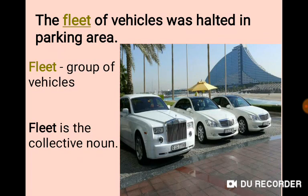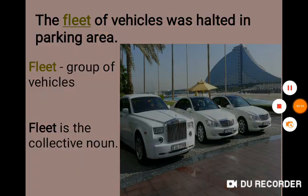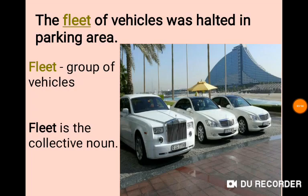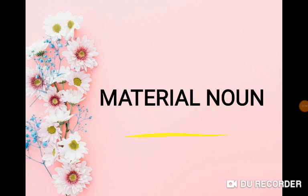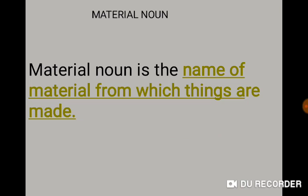So, collective noun means: it is a group of animals, persons, things, or places. Now, the next noun is material noun. What is a material noun? Material noun is a name of material from which things are made.